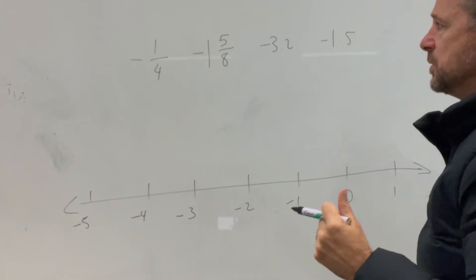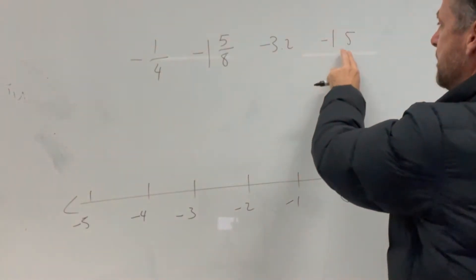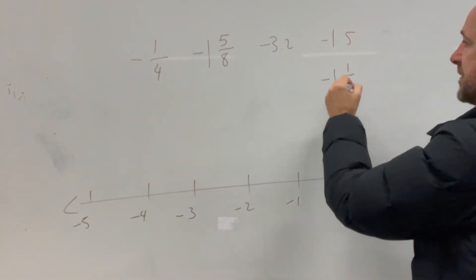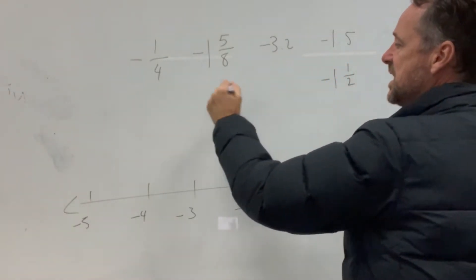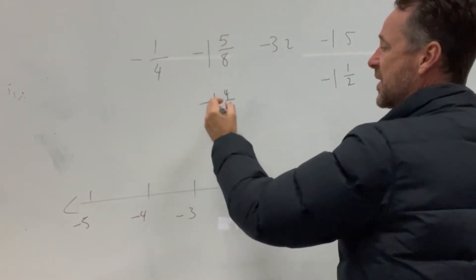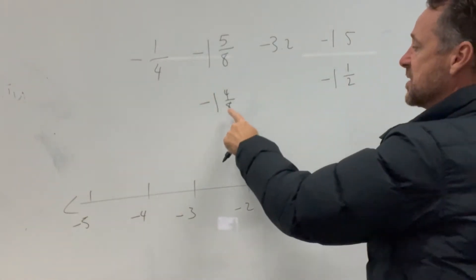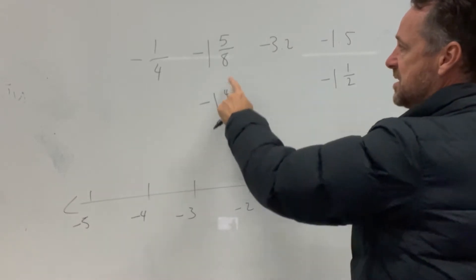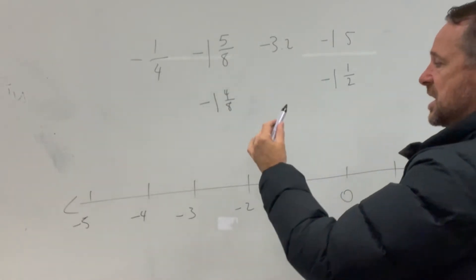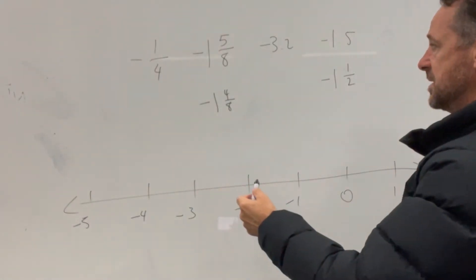What we're looking for here is the idea that negative 1.5 is the same as negative 1 and a half, and negative 1 and a half as a fraction would be 4 eighths. So we know now that negative 1 and 5 eighths is actually a bit smaller — it's a bit further along the negative side of things.